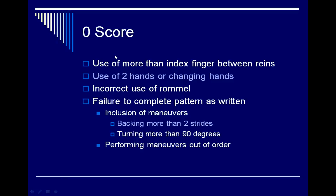For a score of zero, if an exhibitor does any of the following things even once, it results in a zero score for that entire run: use of more than one index finger between the reins when ridden with a curb bit or a romal, use of two hands or changing hands on the reins, or incorrect use of a romal.